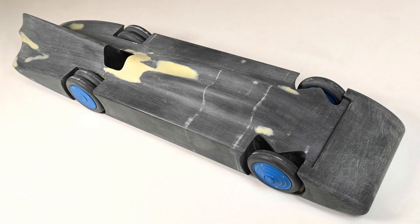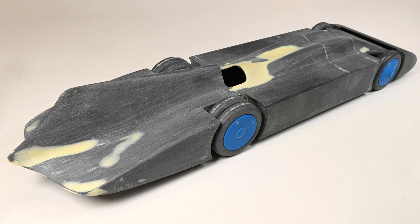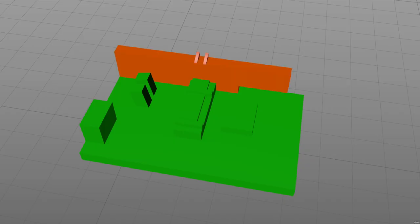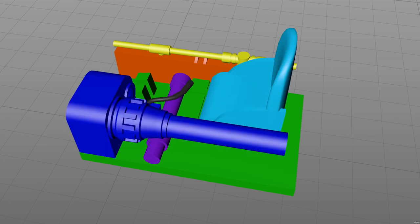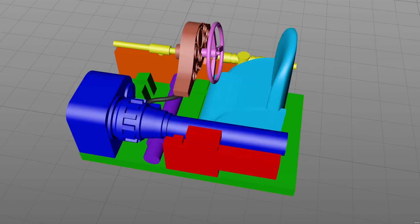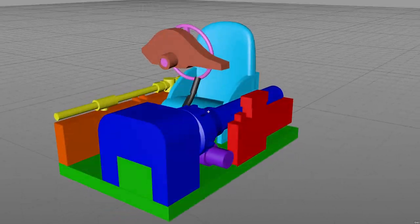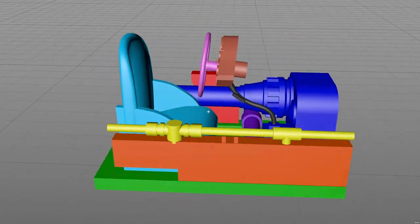Now I had the basic form of Bluebird in the right ballpark it was time to make some progress on the detailed areas. I began by designing the cockpit in my CAD software. Fortunately I found a few good photos of the interior online and felt reasonably confident I could recreate Campbell's office.